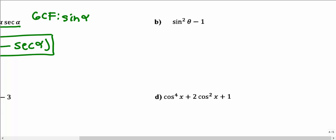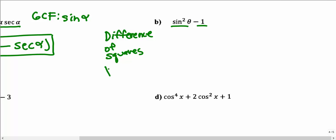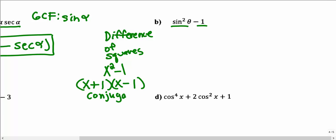To factor sine squared theta minus 1, we recognize two perfect squares forming a difference of squares. Thinking back to algebra, x squared minus 1 factors as x plus 1 times x minus 1 — conjugates. Similarly, sine squared theta minus 1 factors as sine theta plus 1 times sine theta minus 1, where sine theta times sine theta gives sine squared theta.